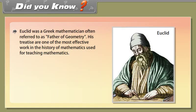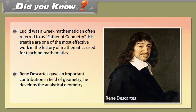Did you know? Euclid was a Greek mathematician often referred to as the father of geometry. His work is one of the most effective in the history of mathematics and was used for teaching mathematics. René Descartes gave an important contribution in the field of geometry — he developed analytical geometry.